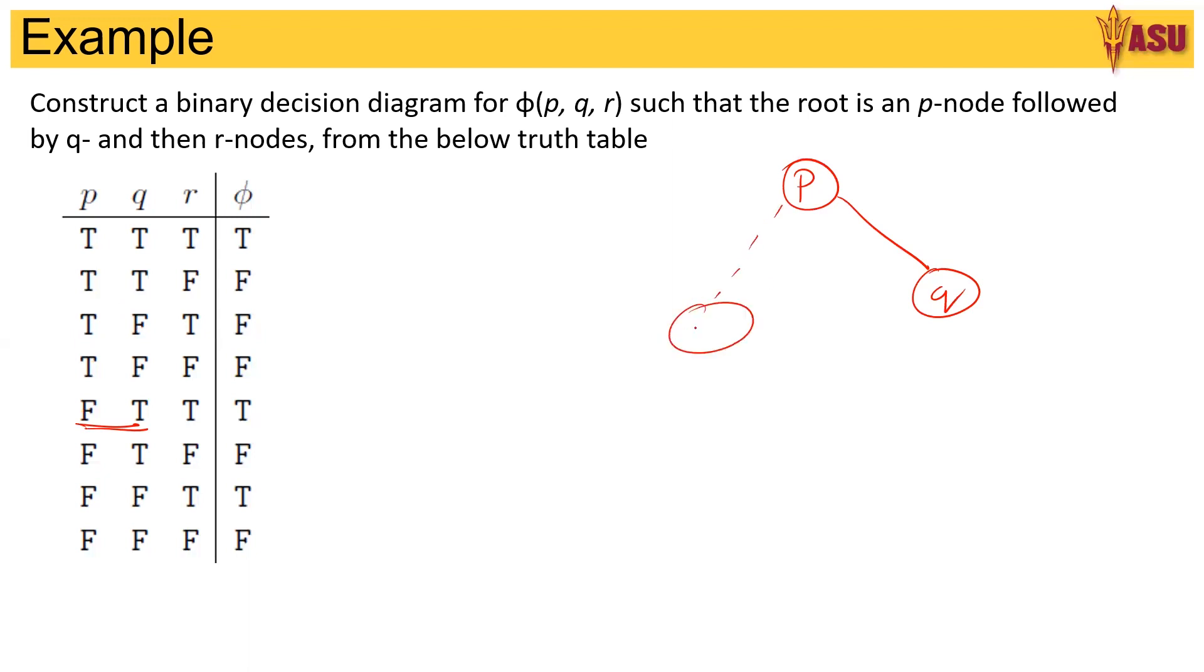We represent 0 or false by a dash and a 1 or a true with a line. So that's called a high and a low.